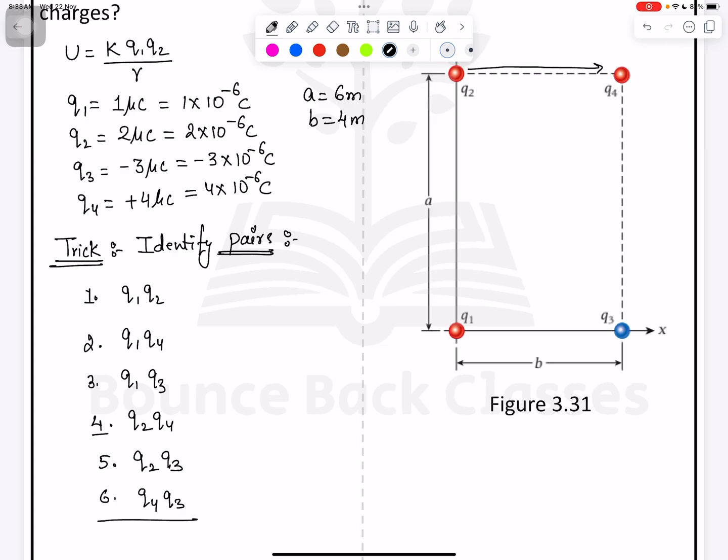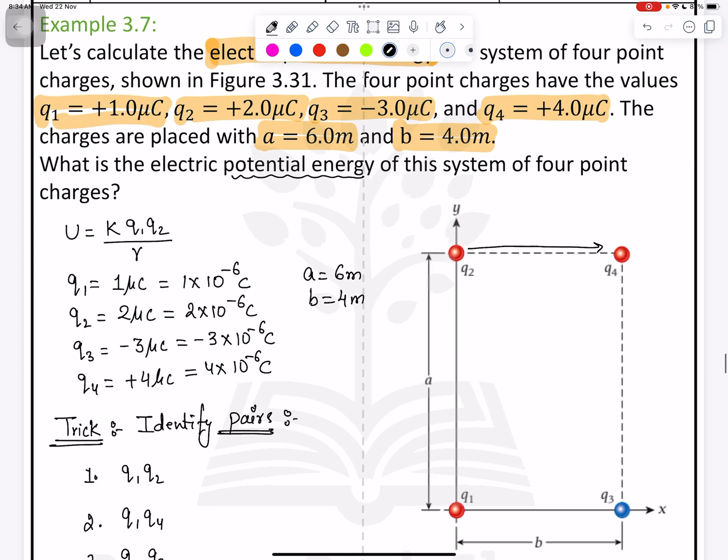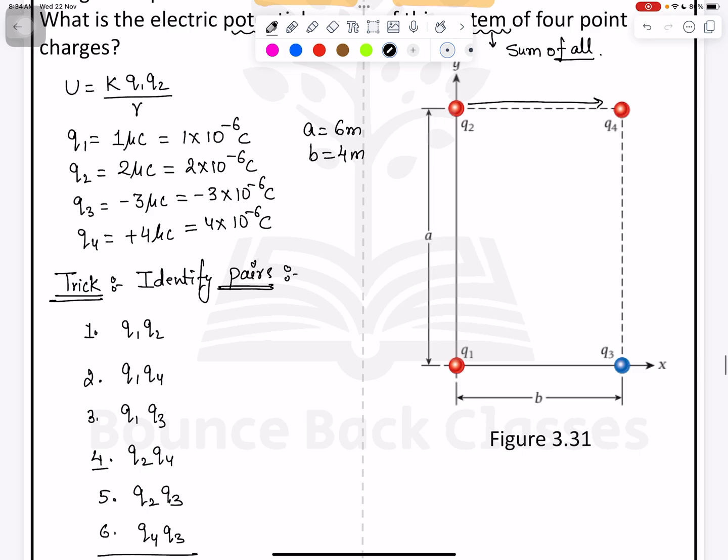These are the six possible pairs. And now we need to start solving potential energy individually because we need to solve the system. System means sum of all potential energy. Now one by one, just apply the formula. We have the equation and solve it. Very easy.